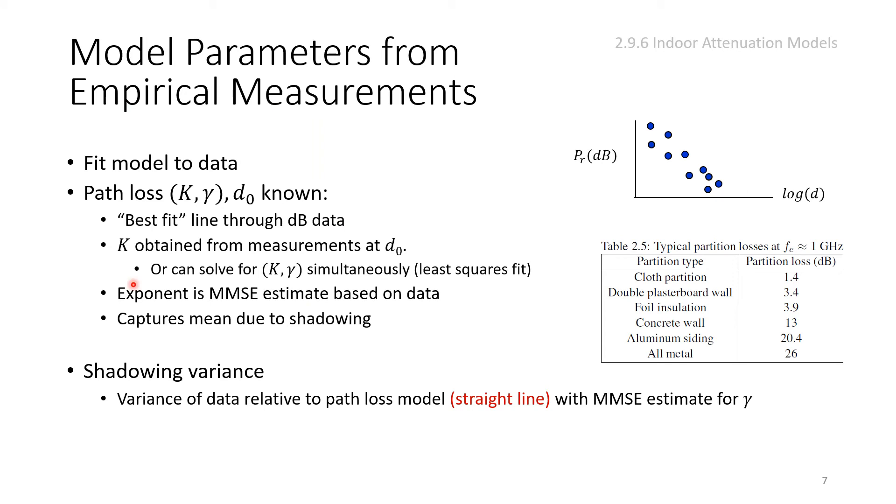For indoor attenuation models and how they do empirical measurements: you fix your transmitter antenna and take measurements at different distances. Don't take one point—you could be on the wrong multipath point. Make a grid of points and average out. Spacing depends on wavelength. Average this grid of 3x3 or 6x6, then change distance. The scatter plot shows log distance versus received power in dB.